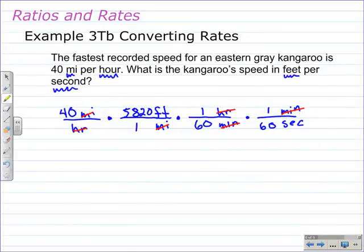So now, my units are straight. I have feet over seconds. Now I just need to multiply. 40 times 5,820, which gives 232,800. And that's going to be feet over 1 times 1 times 60 times 60, which is 60 times 60, which is 60 squared, which is 3,600. And that would be 3,600 seconds.